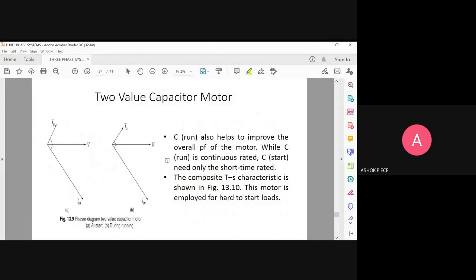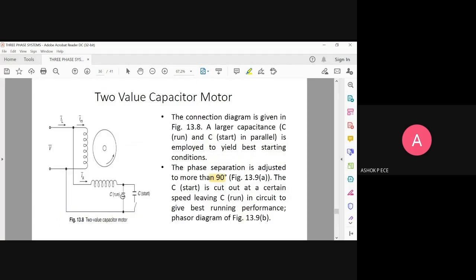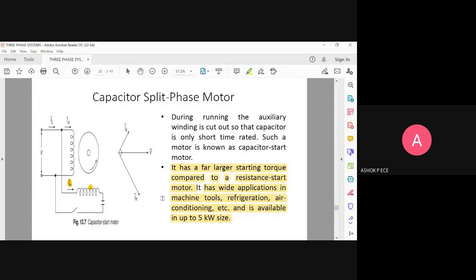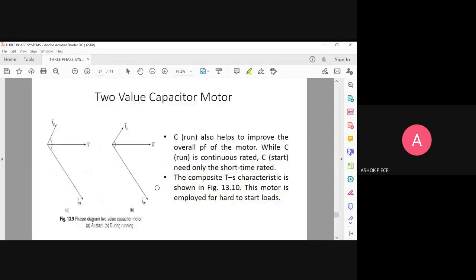See here, at start I_a, I_ab, and I_am. During running also, you see the phase relationship is maintained because one capacitor is always on. During start I have this capacitor connected, and during run I have this capacitor connected. Since a capacitor is always there, the current in the auxiliary winding will always be leading your voltage, and current in the main winding will always be lagging behind your voltage.